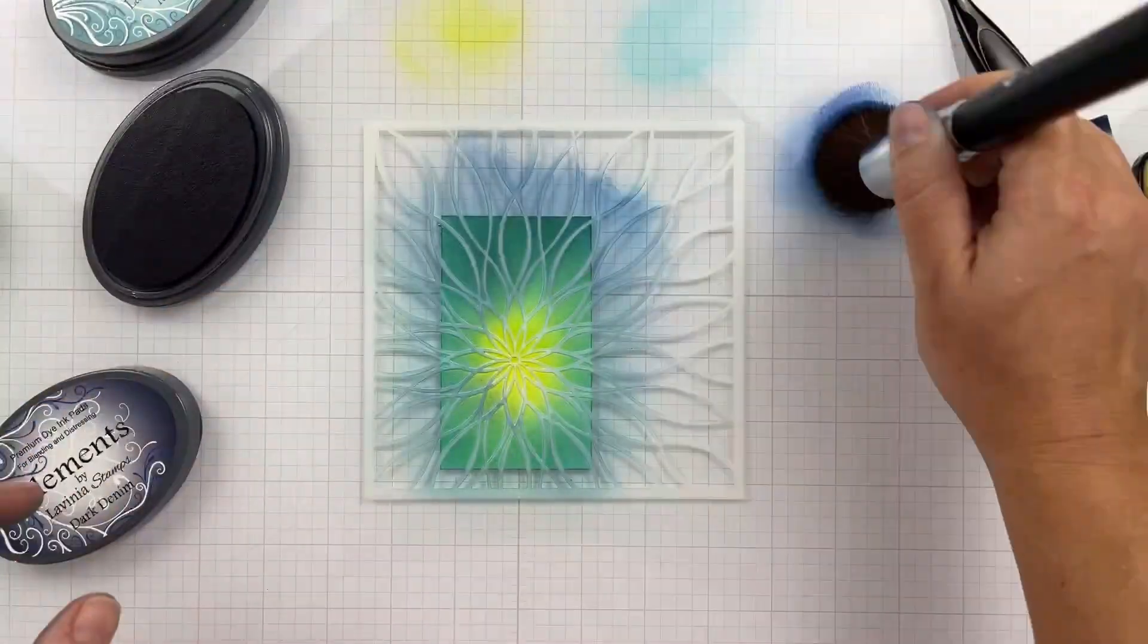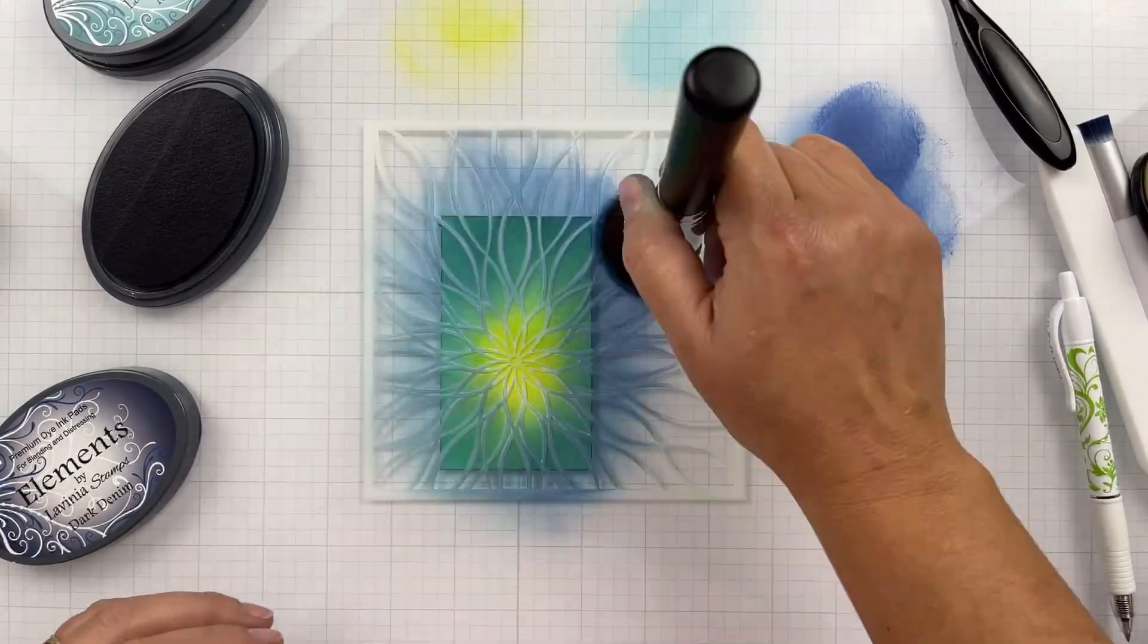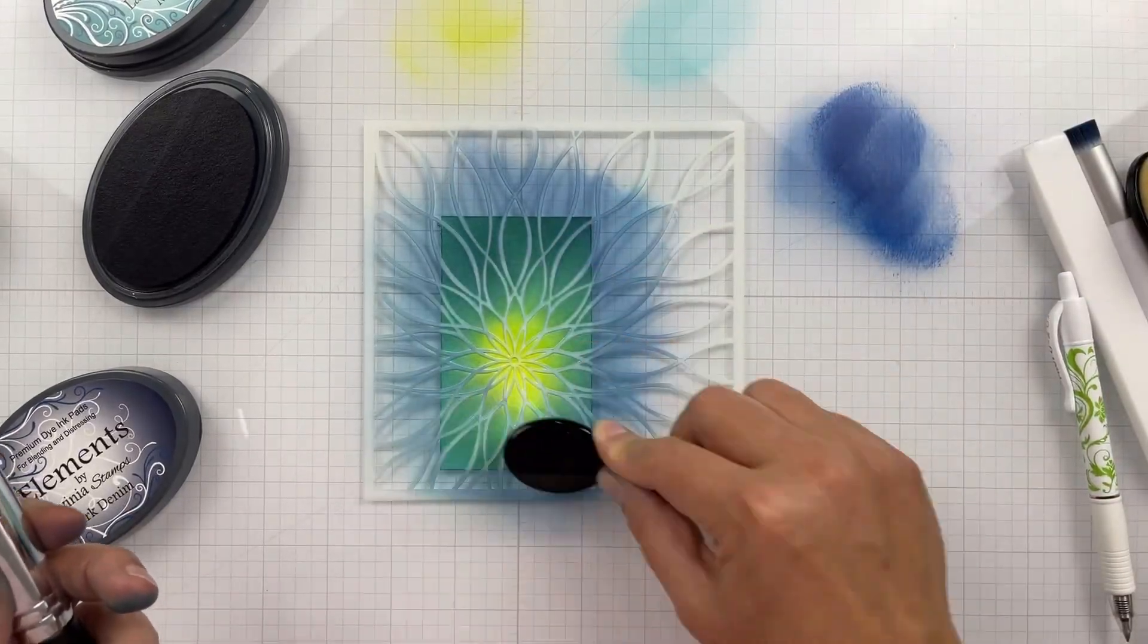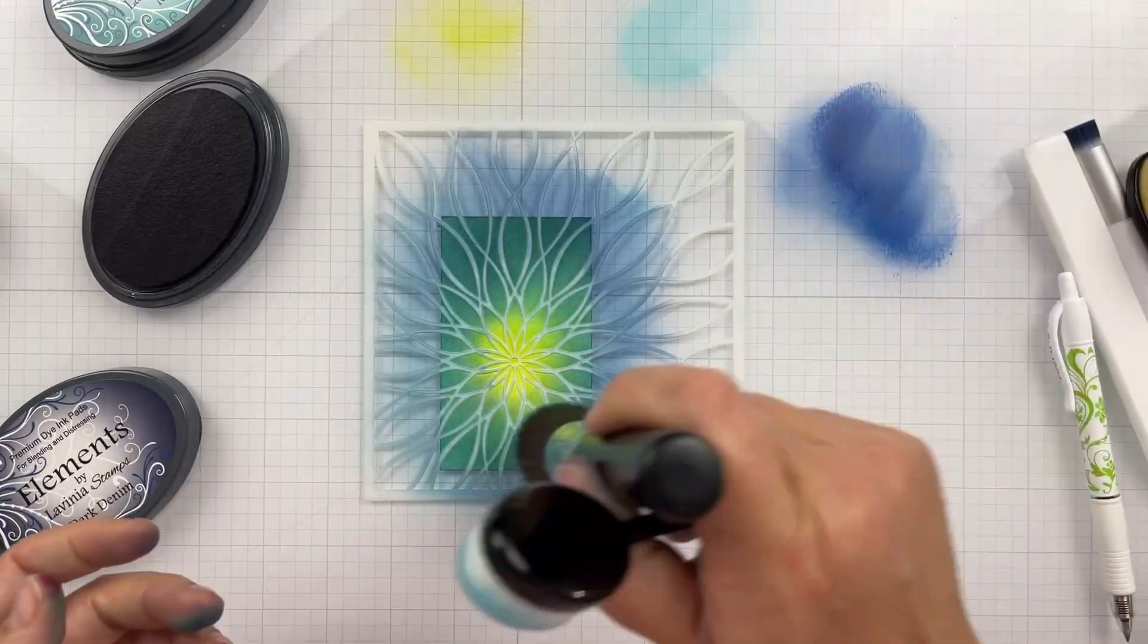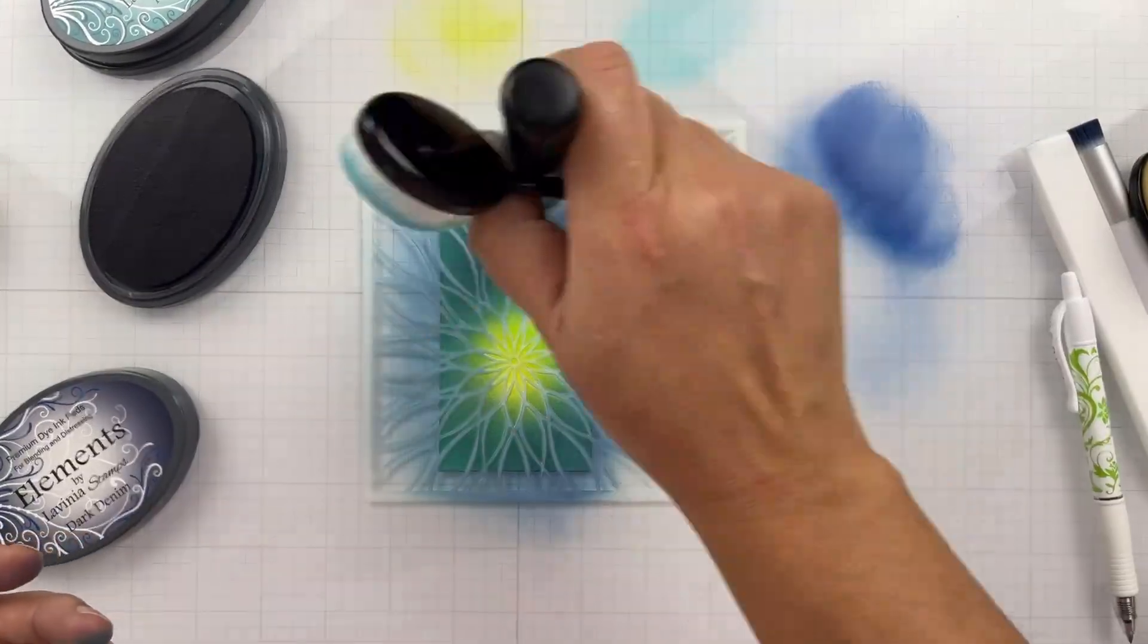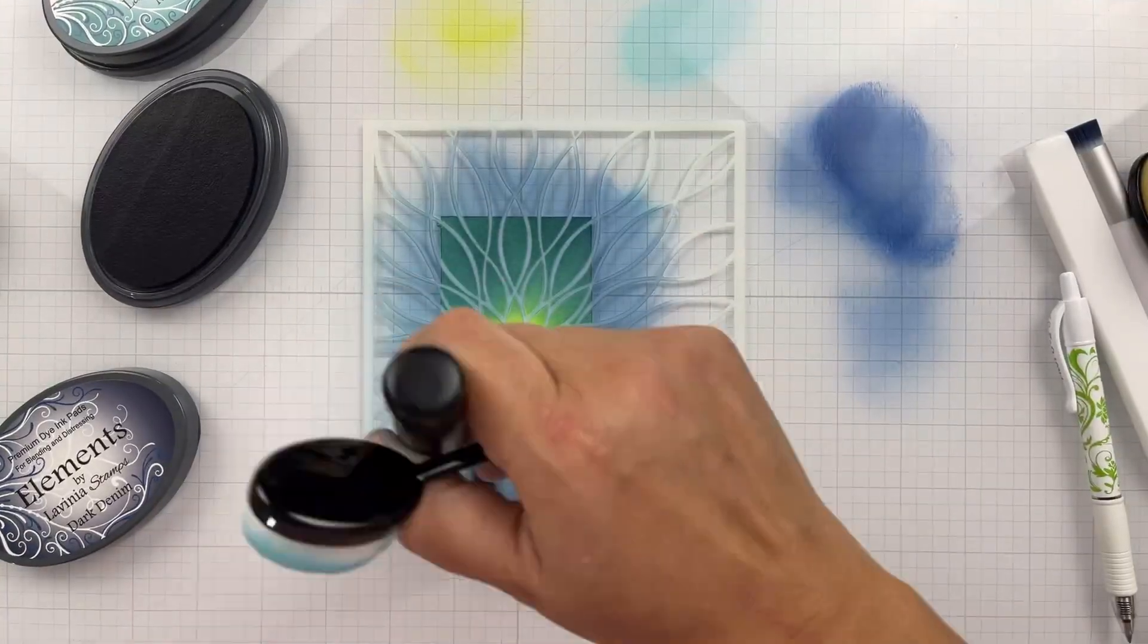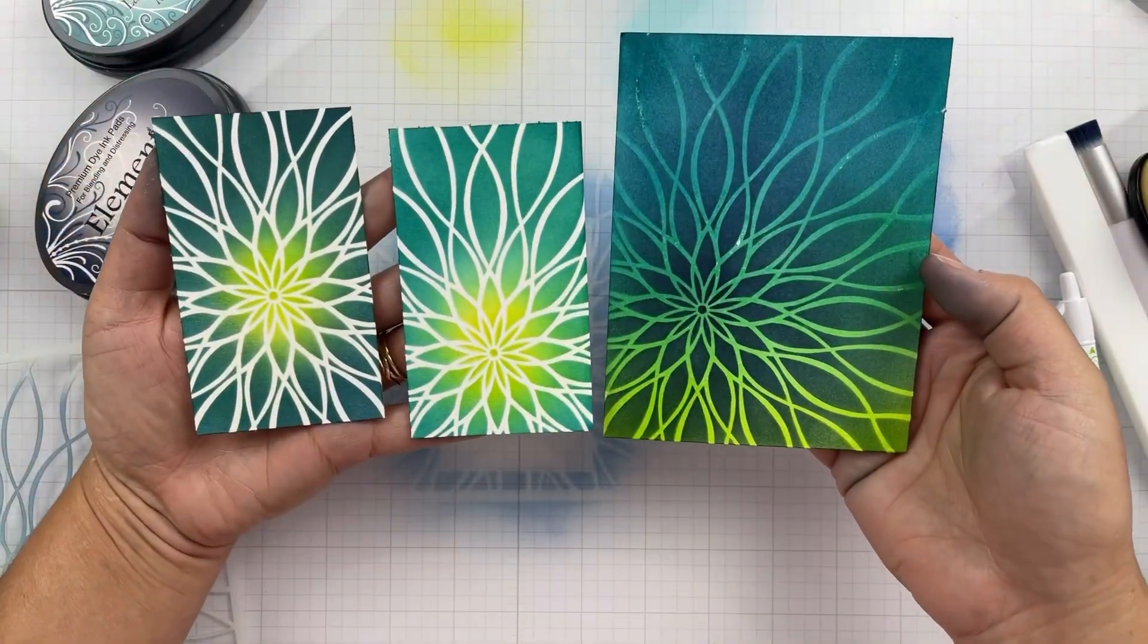I have another video coming out using Verdant and Warm Breeze, and I actually use Paradise for that one, so Paradise will work too if you don't have Twilight. Once I get this all blended up I'm going to remove that stencil, and I do want to mention I do clean the stencils in between each one because I don't want the color contamination.